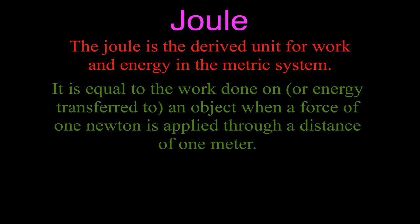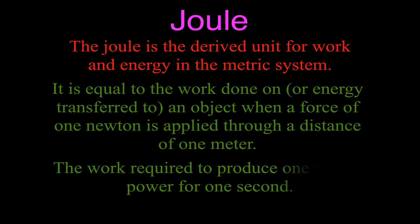One joule is equal to the work done on an object, or the energy transferred to an object, when a force of one newton is applied through a distance of one meter. It is also the work required to produce one watt of power for one second, which is often used for electricity and light bulbs rated in watts.